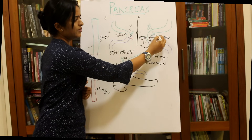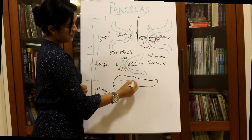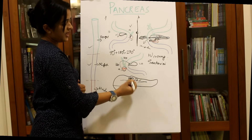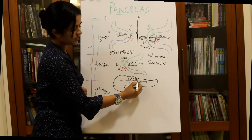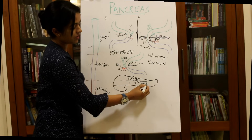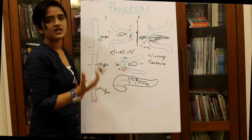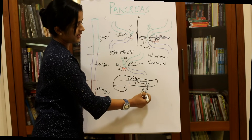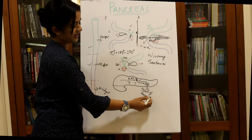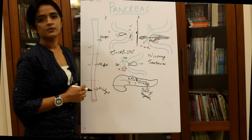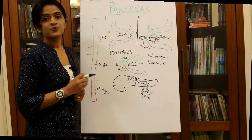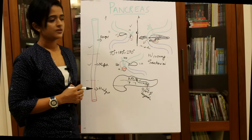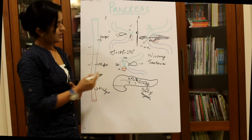These ducts give off many sprouts forming ductules and acini. The major duct gives rise to many smaller ductules and acini. In course of time, some acinar cells migrate from the walls of the acini and form a cluster of cells known as the islets of Langerhans. The islets of Langerhans are formed by the third month of intrauterine life; they are essentially separated acinar cells that cluster together to form these small endocrine groups.